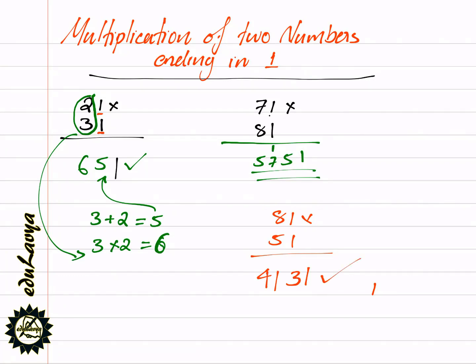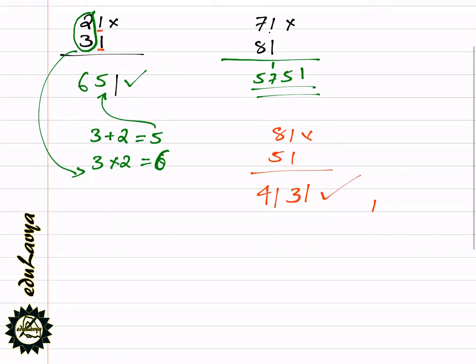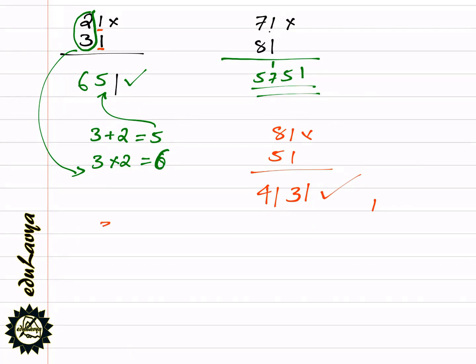One example: 31 into 19. First place 1. 93. 12. 19.